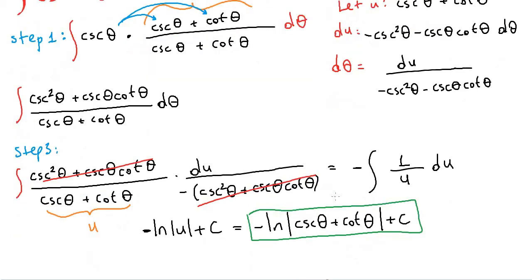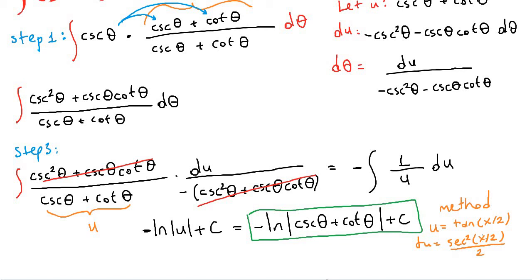The second alternative is again u-substitution, but this time u will be tangent of x over 2. Then du will be the derivative of this: secant squared of x over 2, divided by 2. You express secant squared in terms of sine and cosine using the identity that secant equals 1 over cosine, and placing everything in terms of sine and cosine you solve this integral using the second method.